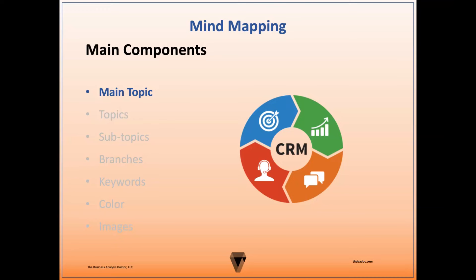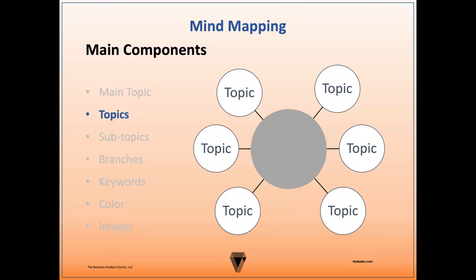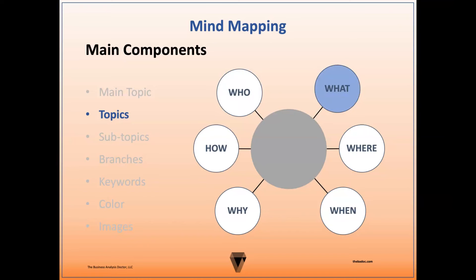This is most common when drawing a mind map by hand or when exploring a more visual topic. Next up are topics. Topics are thoughts or ideas that elaborate on the main ideas. These represent high-level components or categories associated with the main topic. When using the five W's and an H method to explore a project, these nodes will be labeled who, what, where, when, why, and how.